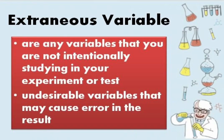What is an extraneous variable? Extraneous variables are any variables that you are not intentionally studying in your experiment. When you run an experiment, you're looking to see if one variable — the independent variable — has an effect on another — the dependent variable. Unfortunately, other variables you may never have considered might influence the outcome. These undesirable variables are called extraneous variables. In our experiment, human urine and rain are examples that may ruin the result and hinder a conclusive and valid outcome.